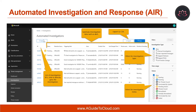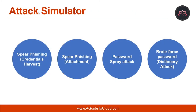Let's understand what is automated investigation and response, which is known as AIR. Automated investigation and response capabilities enable you to run automated investigation processes in response to well-known threats that exist today. Automated investigation response can help your security operations team operate more efficiently and effectively. AIR is included in Microsoft 365 E5, E5 Security, Office 365 E5, and Office 365 ATP Plan 2.